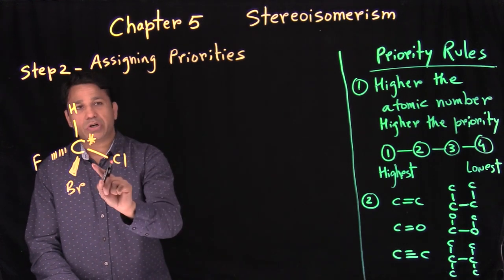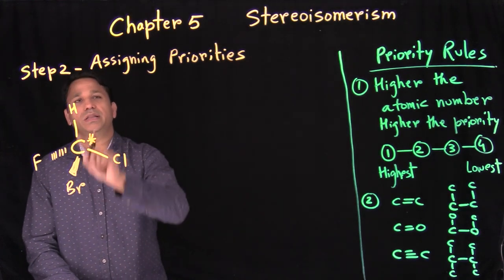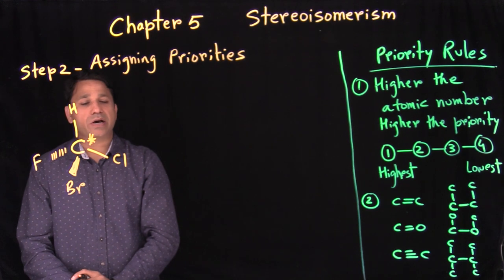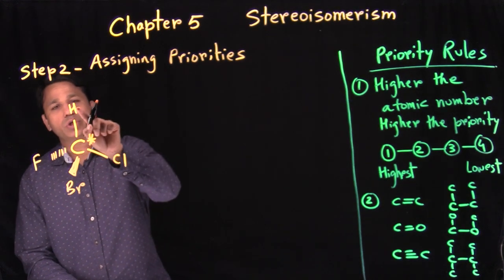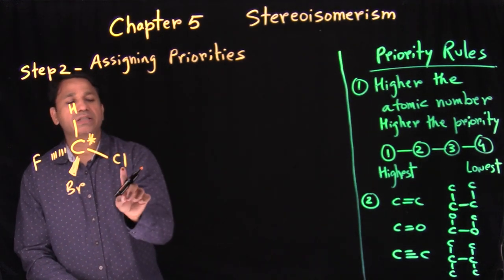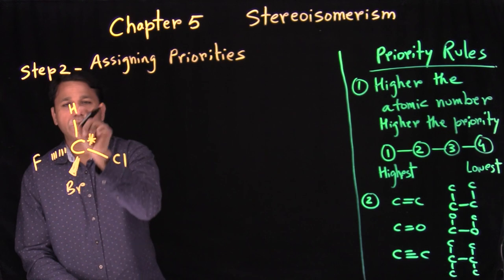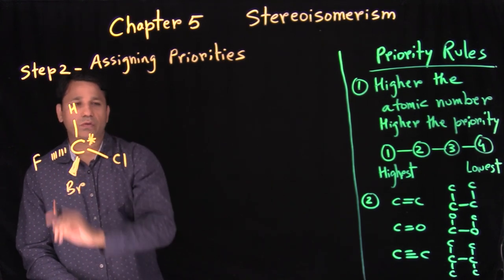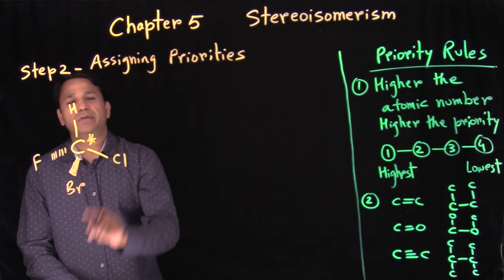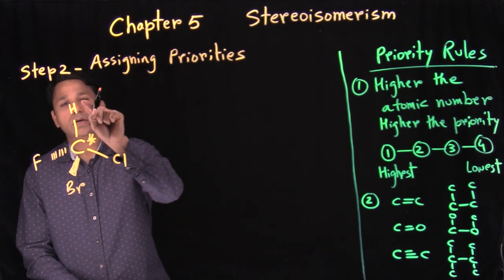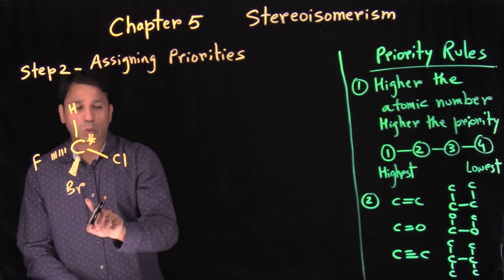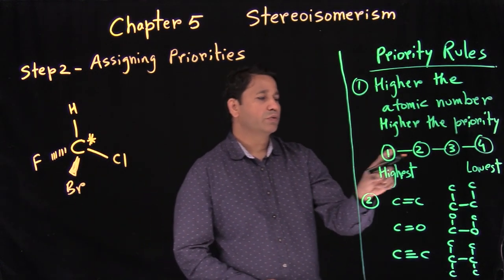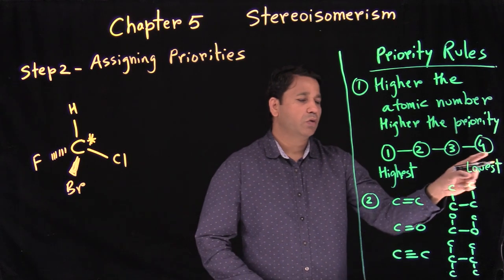If it's a stereogenic carbon, then you go to step two. Step two is assigning priorities. Which group gets the highest priority? We have hydrogen, chlorine, bromine, and fluorine. We're assigning priorities to each group — one, two, three, and four.